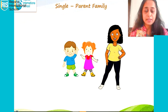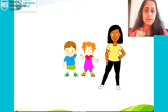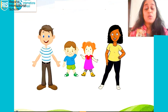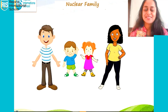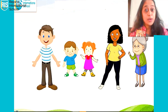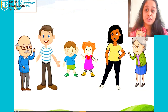In a single parent family, the child stays with either mother or father. When the child stays with both parents, it is called a nuclear family. And when the grandparents, the parents and the children all live together, it is called a joint family.